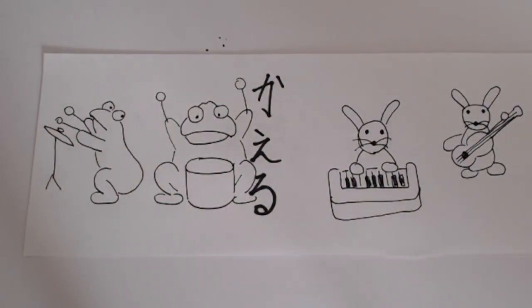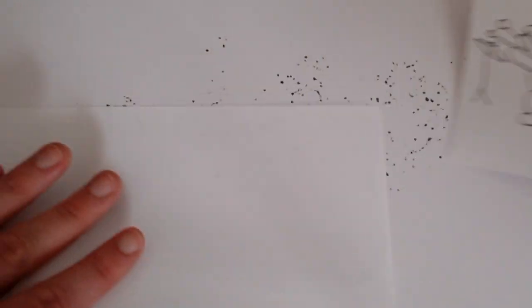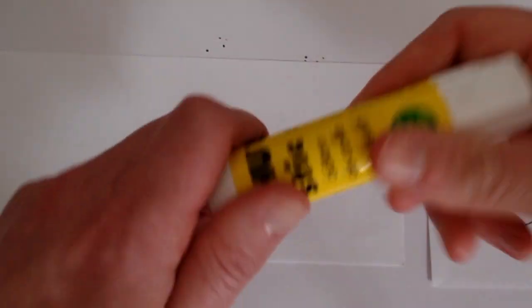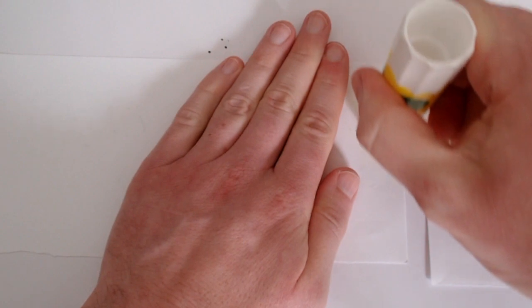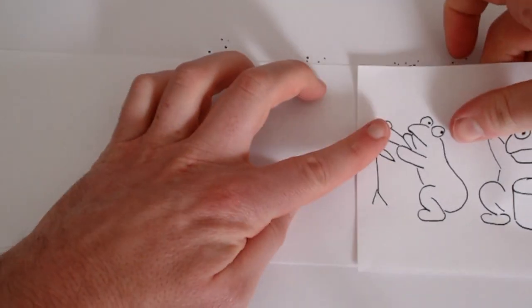Now do you remember we ripped our piece of paper in half? That's going to be the next part of our emaki, of our scroll. So I've got my next piece here. I'm going to get my nori and I'm going to put a line down here and paste that on there.